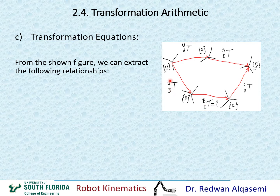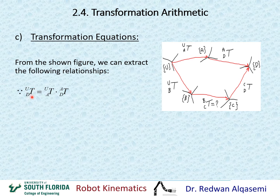I'm going to extract some relationships here. I'm going to define the transformation matrix of D relative to U — directly D relative to U. The transformation matrix of D relative to U can be defined by multiplying T of A relative to U, this line right here, multiplied by T of D relative to A, this line right here.